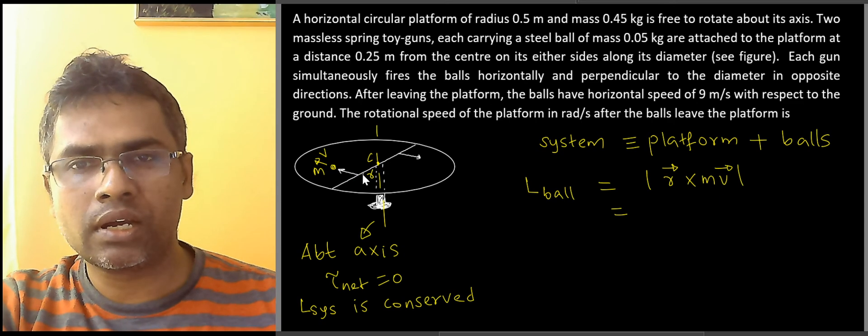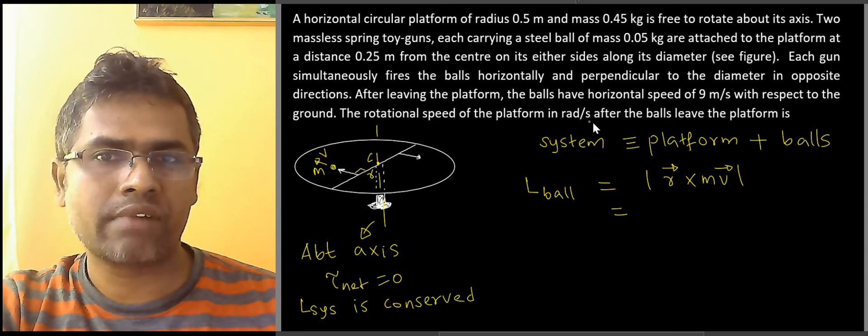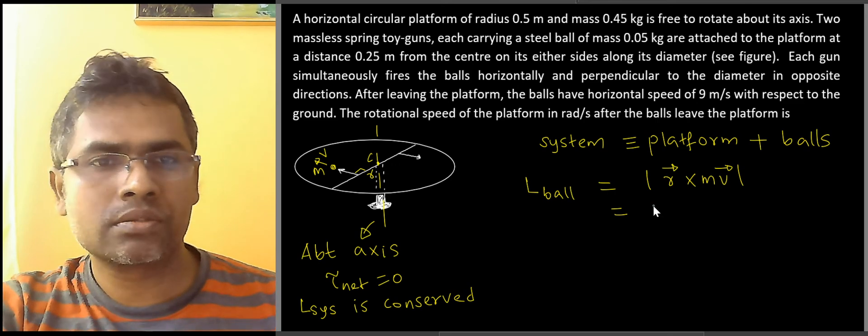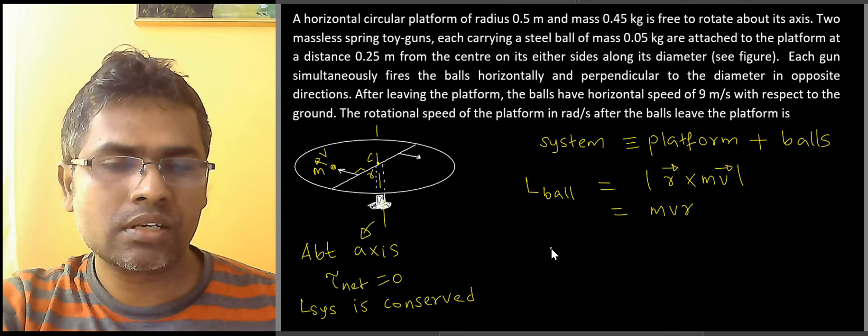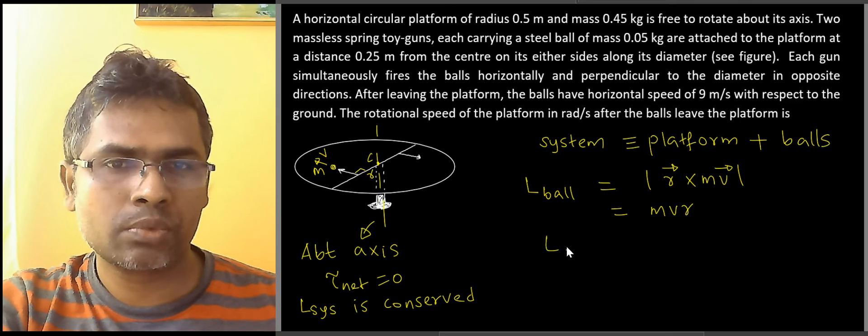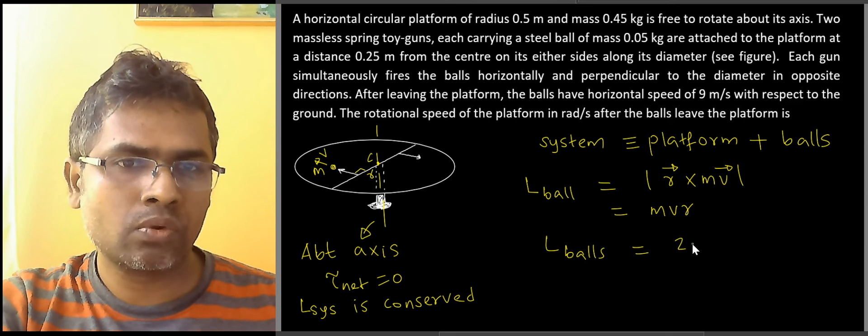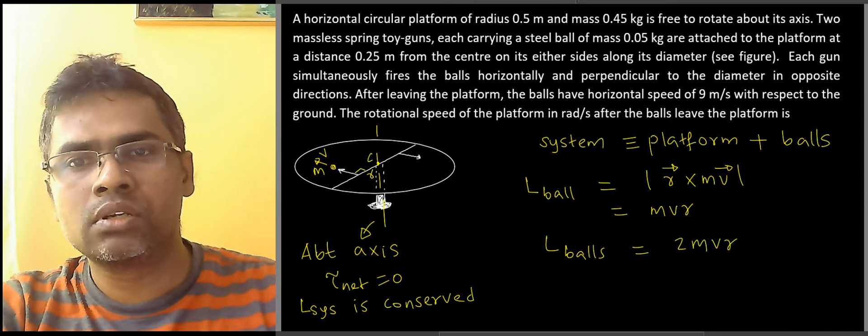The angle between the velocity and the position vector is clearly 90 degrees because the balls are fired at right angles to the diameter, so this is clearly mvr. If I consider both the balls, the angular momentum of the balls would be 2mvr and if you use the right hand thumb rule.